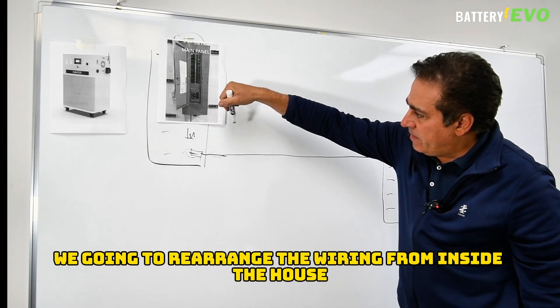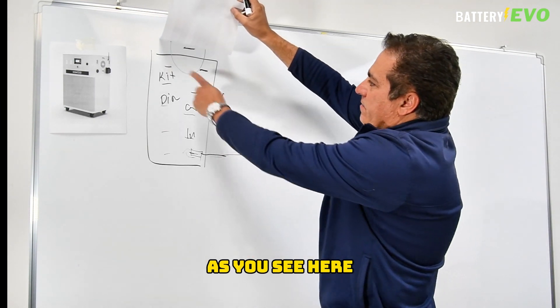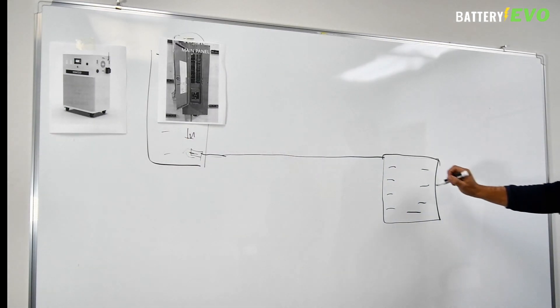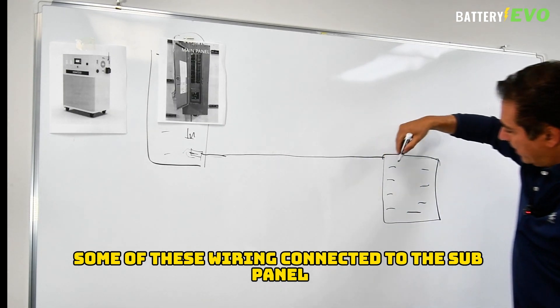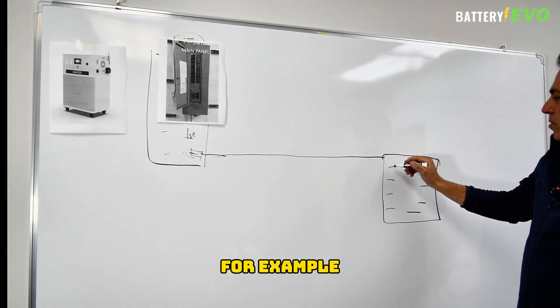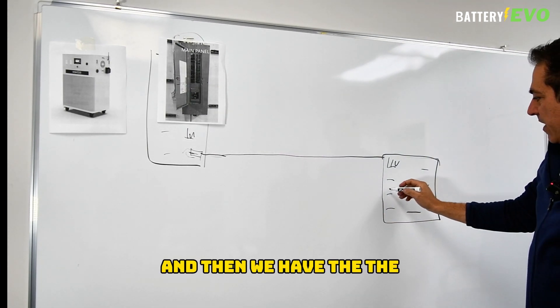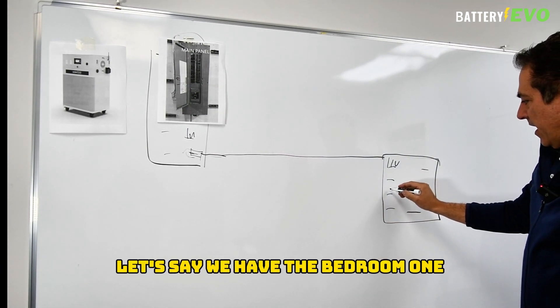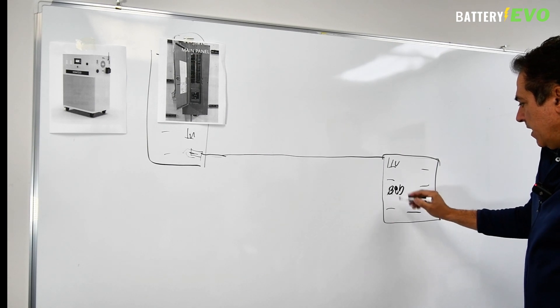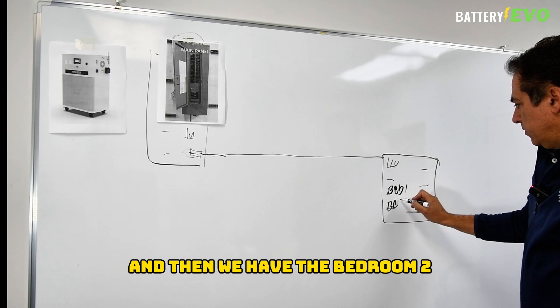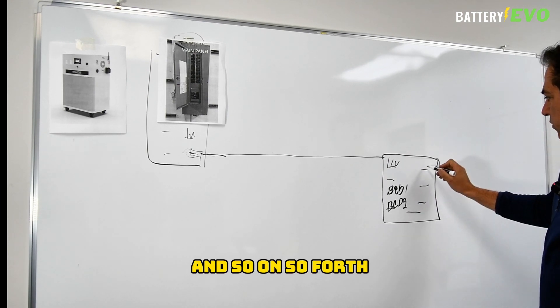The sub panel will be connected. We're going to rearrange the wiring from inside the house. As you see here, living room, kitchen, dining room. So we're going to use some of this wiring connected to the sub panel. For example, we bring all the lighting from the living room to this breaker, and then we have bedroom one, and then we have bedroom two, and so on.